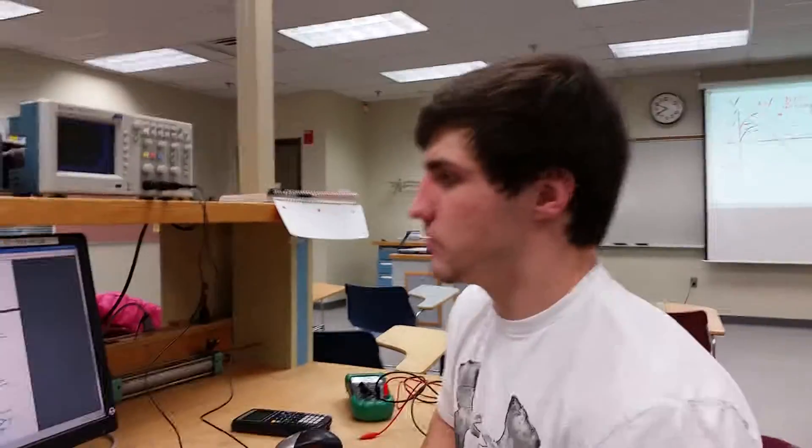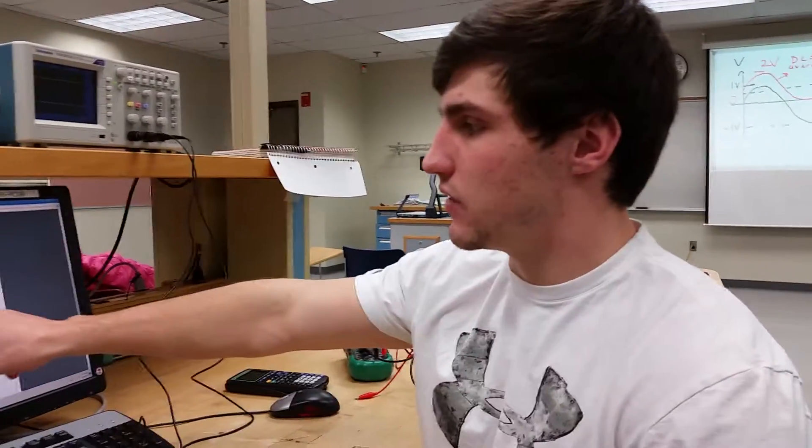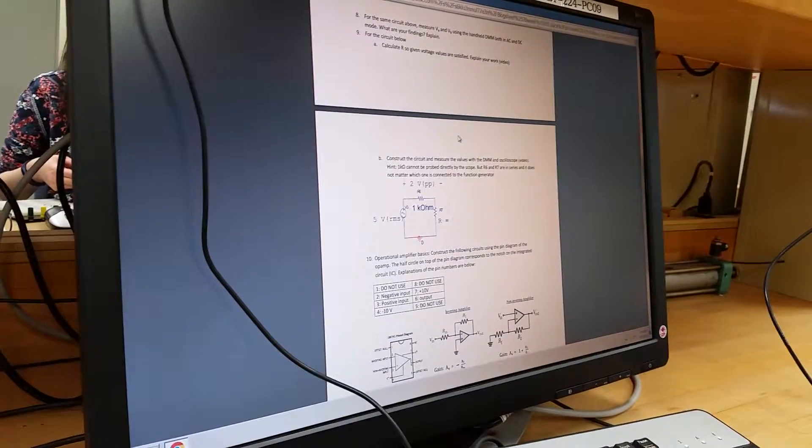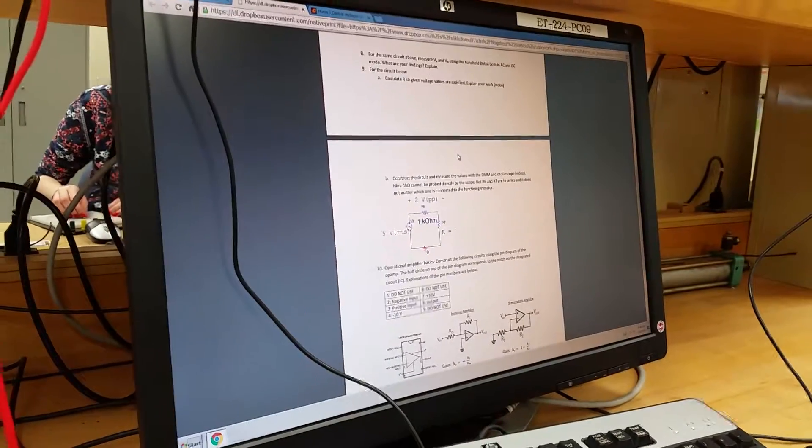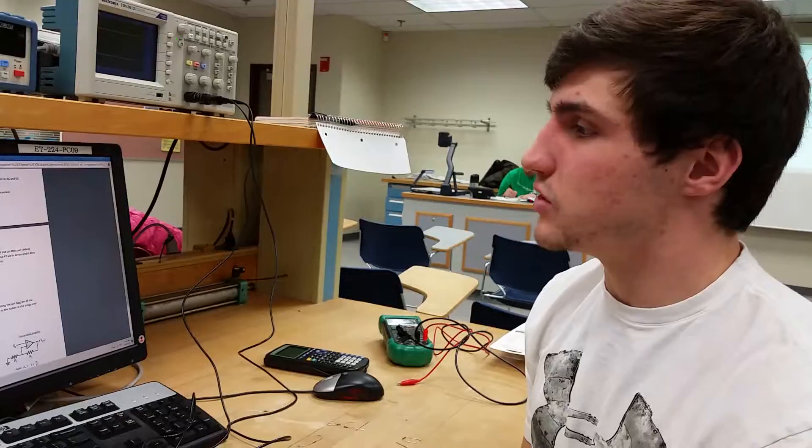Alright, so for this circuit we had to find the R value. For R6, it was given as 1 kilohm and had 2 volts peak-to-peak, which is 1 volt peak. If you find the RMS value, it ends up being about 0.7 volts. Using voltage divider,